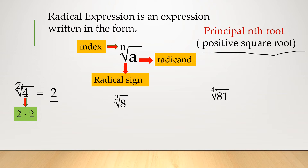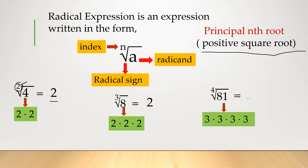If it's a square root, we can remove the index 2. Now I have the cube root of 8 — what number raised to 3 gives the answer 8? That is equal to 2. And then the fourth root of 81: what number raised to 4 is equal to 81? That is 3. So the fourth root of 81 is 3.